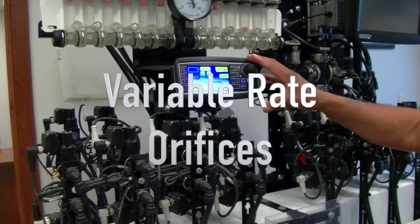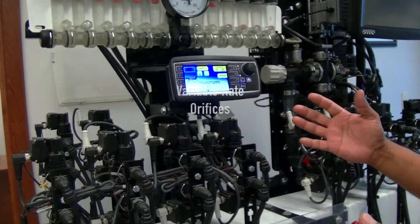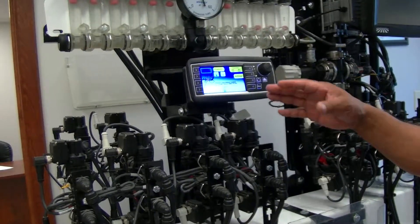This is the AgExcel GX30 system that allows us to do variable rate and also high-speed planters and adjust to the rate accordingly.